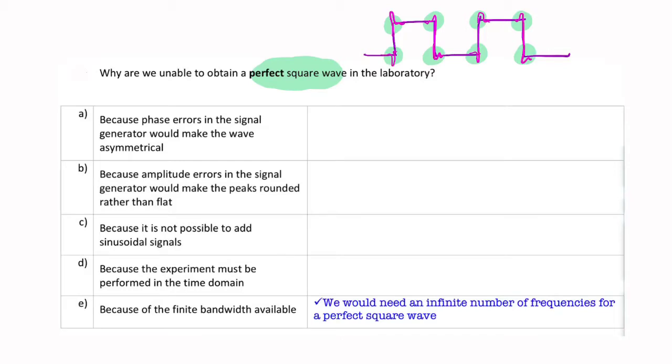Remember, we said the Fourier series requires an infinite number of components. So what we need is an infinite number of sine waves—if I use the generalized formula, CN times cosine omega naught T plus phi.